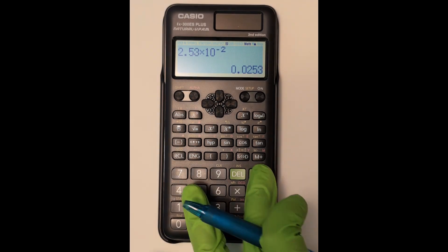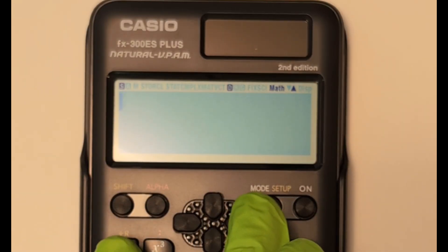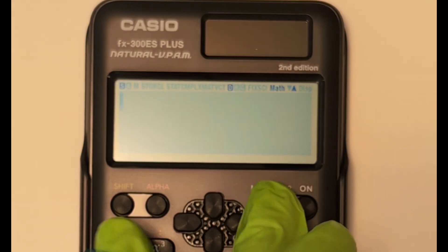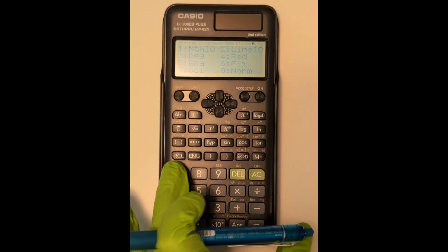But let's say I'm starting with that value, and I want to convert it into scientific notation. First, I hit shift, then the mode setup, then I choose option 7 for science, for scientific notation.